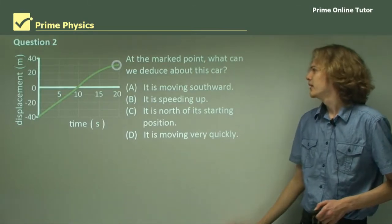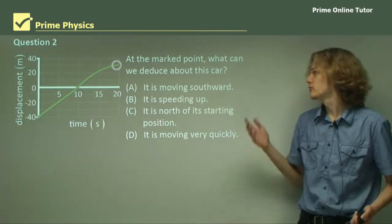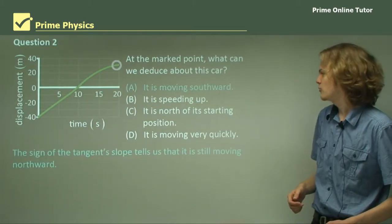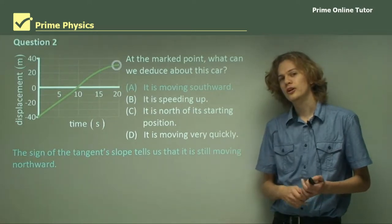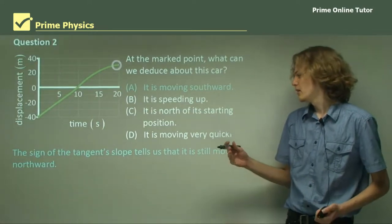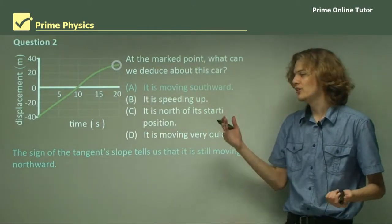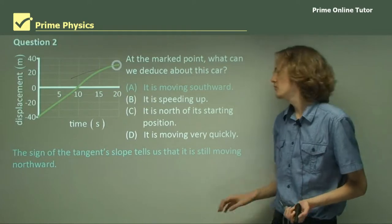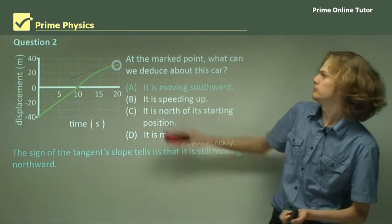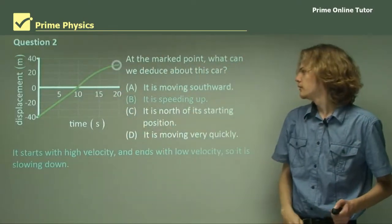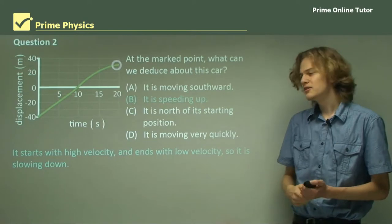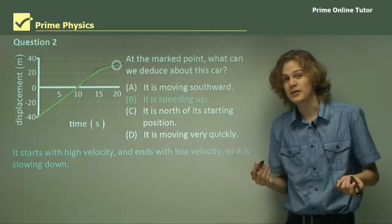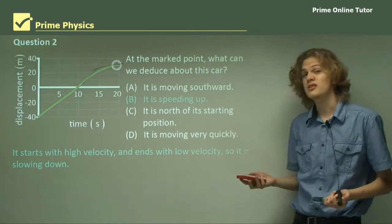Question 2. At the marked point, what can we deduce about this car being graphed by the displacement time graph? Option A: it is moving southward. The sign of the tangent slope tells us whether it's moving northward or southward. If moving northward it has a positive slope; if moving south, a negative slope. We can see that at this point the tangent is still positive, which means the car is still moving northward. Option A is wrong. Option B: it is speeding up. We can see the car's velocity is quite fast earlier, but near the end it's a lot slower, so it can't be speeding up — it is in fact slowing down. B is not the right answer either.